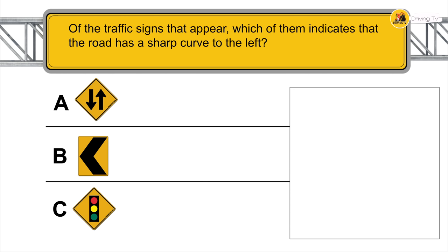Of the traffic signs that appear, which of them indicates that the road has a sharp curve to the left?